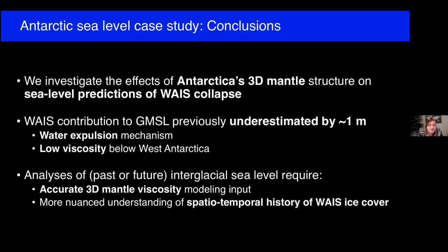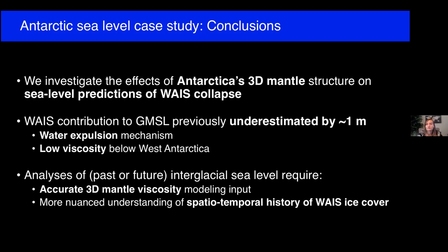To conclude the second case study: we investigated the effects of Antarctica's 3D mantle structure on sea level predictions of WAIS collapse. We find that the WAIS contribution to global mean sea level was previously underestimated by about one meter, due to the water expulsion mechanism and in particular the low viscosity beneath West Antarctica. Analyses of past or future interglacial sea level will require more accurate 3D mantle viscosity modeling inputs, as well as a more nuanced understanding of the spatial-temporal history of WAIS ice cover, since the water expulsion mechanism only occurs if the ice sheet is fully removed — a very thin but still grounded ice sheet will not produce the same signal.